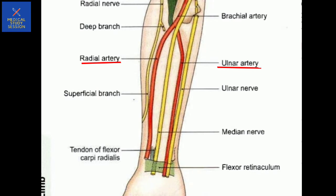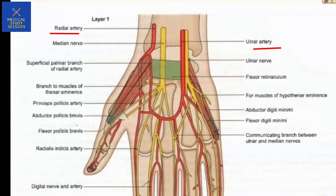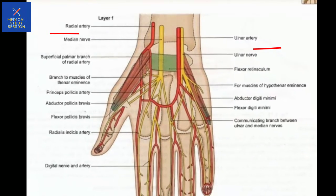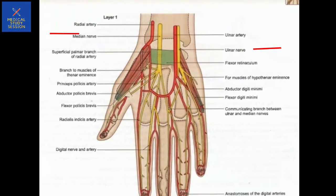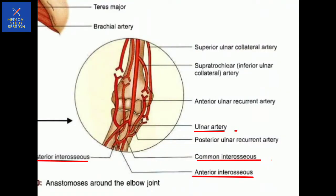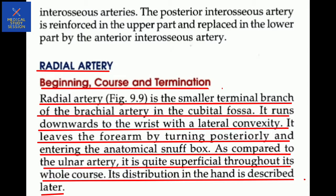The most conspicuous, meaning superficially easily palpable arteries of the forearm, are the radial and ulnar arteries. The radial and ulnar arteries form the palmar arch and supply the hand. The artery that chiefly supplies the forearm is the common interosseous branch of the ulnar artery, which divides into anterior and posterior interosseous artery. The posterior interosseous artery supplies the upper part and the anterior interosseous artery supplies the lower part.